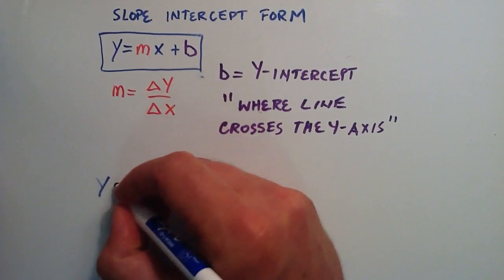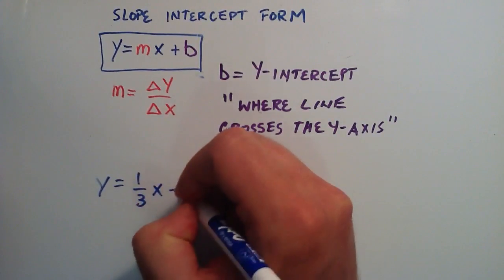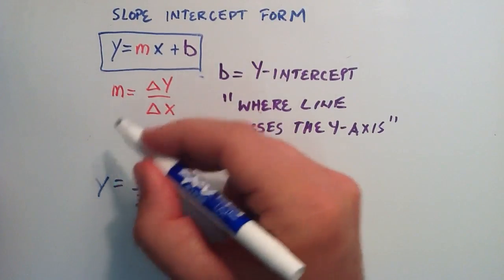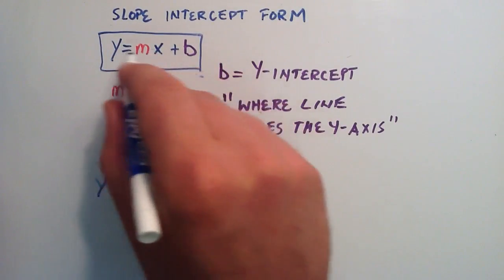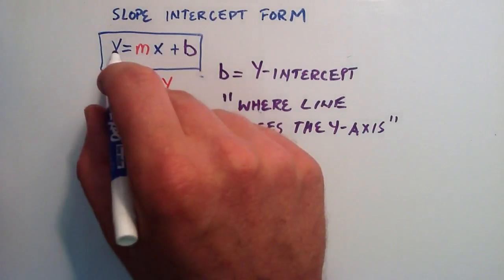Let's say that we have the line y equals one-third x minus one. So, if you can tell, this is in a similar form as this equation up here. It's in the slope-intercept form.